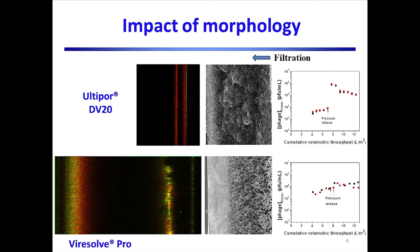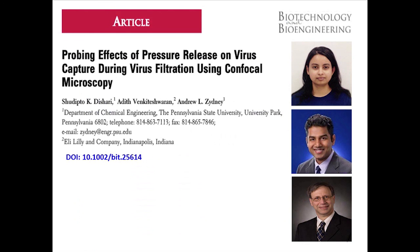These results clearly demonstrate that the material properties and pore morphology of the virus filter have a large effect on the details of virus capture and retention. The direct visualization of virus capture using the two-label fluorescence technique provides unique insights into the factors controlling the retention characteristics of virus filters with different pore structure. To know more about this work, please check our article in Biotechnology and Bioengineering's current issue. Thank you for taking the time to watch this presentation.